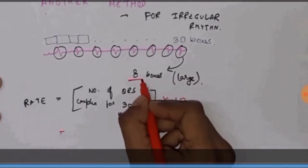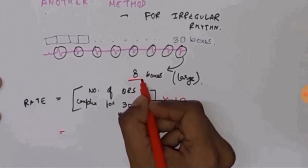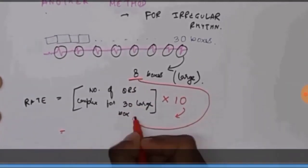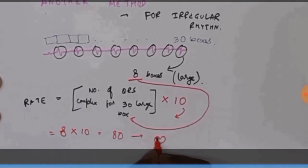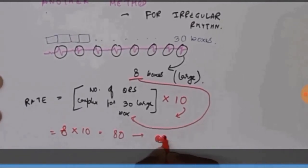In previous one, we had the multiplication factor of 6, which makes it hectic, kind of. Here, we have the advantage of the factor is 10, and another thing is we have to count the 30 boxes, rather than 10 seconds, which is much easier. So, it is 8 multiplied by 10, which is 80, which is 80 beats per minute.